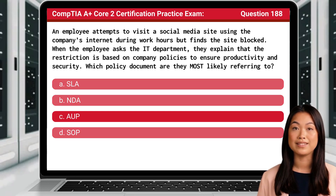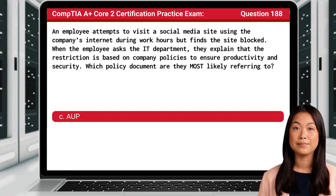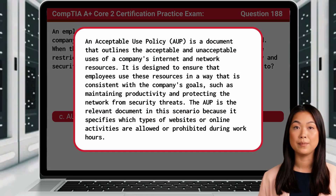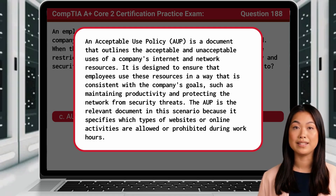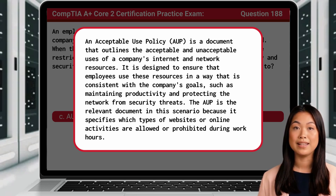The answer is C: AUP. An Acceptable Use Policy, or AUP, is a document that outlines the acceptable and unacceptable uses of a company's internet and network resources. It is designed to ensure that employees use these resources in a way that is consistent with the company's goals, such as maintaining productivity and protecting the network from security threats. The AUP is the relevant document in this scenario because it specifies which types of websites or online activities are allowed or prohibited during work hours.